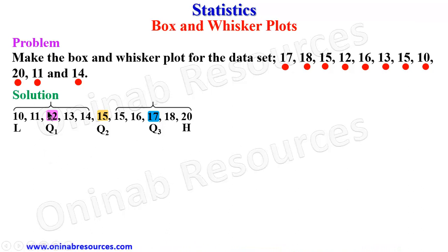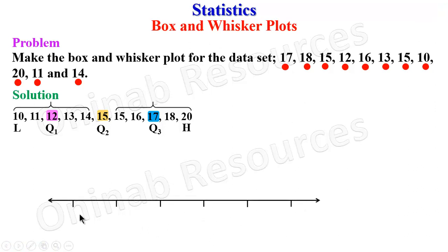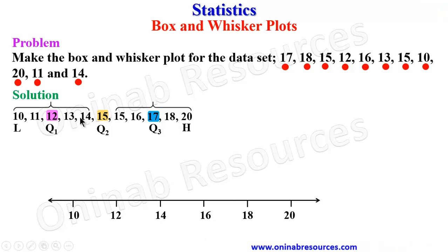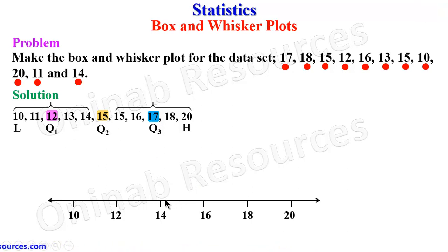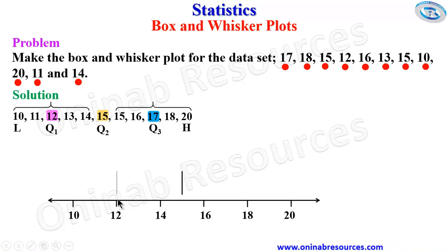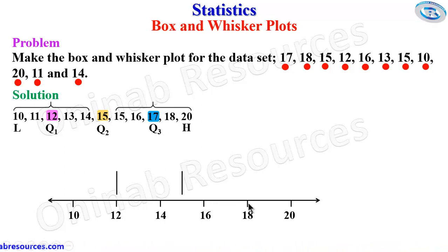We then represent these values in the box and whisker plot. We start with the number line: 10, 12, 14, 16, 18, 20. The median is 15, which is halfway between 14 and 16 — that's Q2. Q1 is 12, and Q3 is 17, which is halfway between 16 and 18.